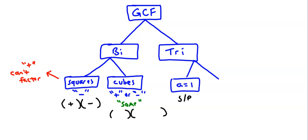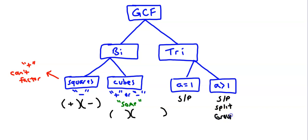If the coefficient in front of x² is bigger than one, or if you're dealing with two variables like x and y, or powers greater than x² such as x to the fourth, you don't get the answer right away from the sum and product. Instead, you use those key numbers to split the middle term. Then you make your groups and take the GCF three times.